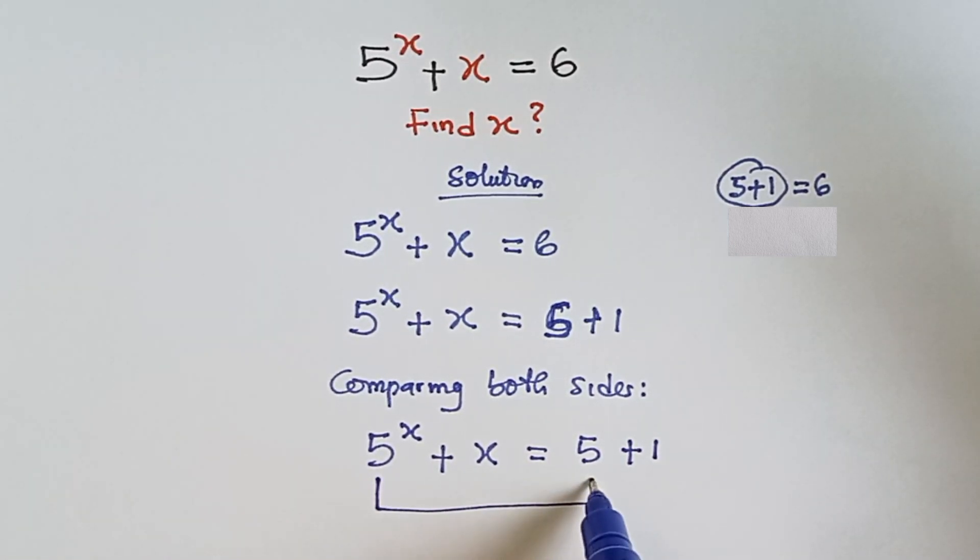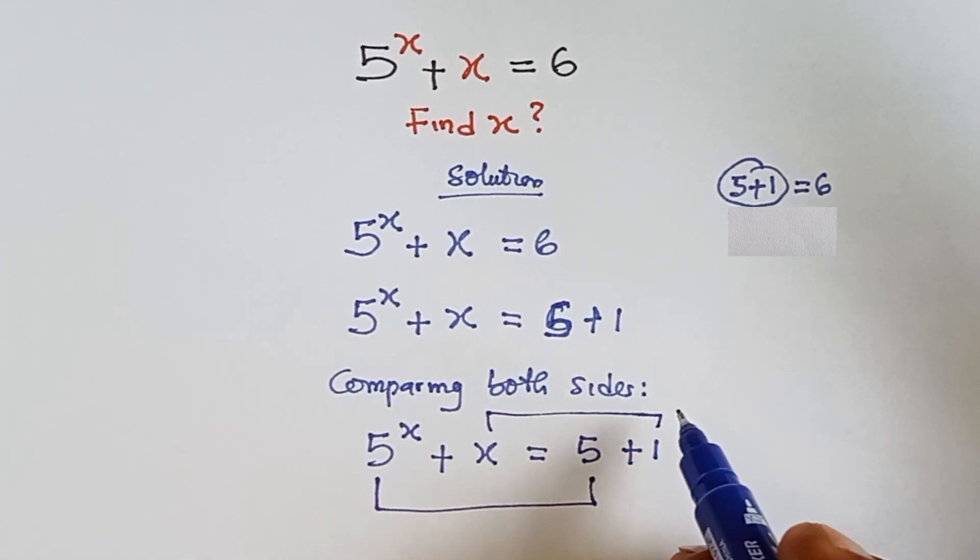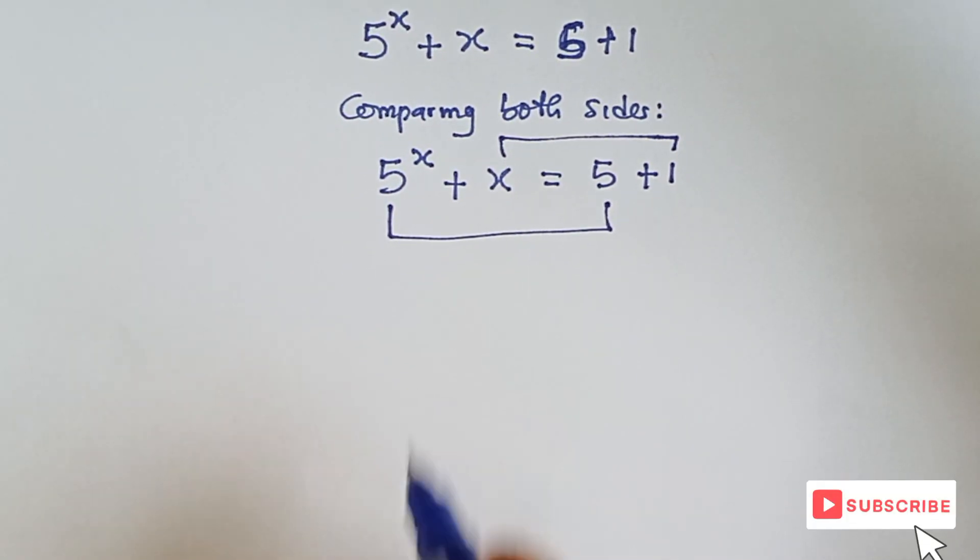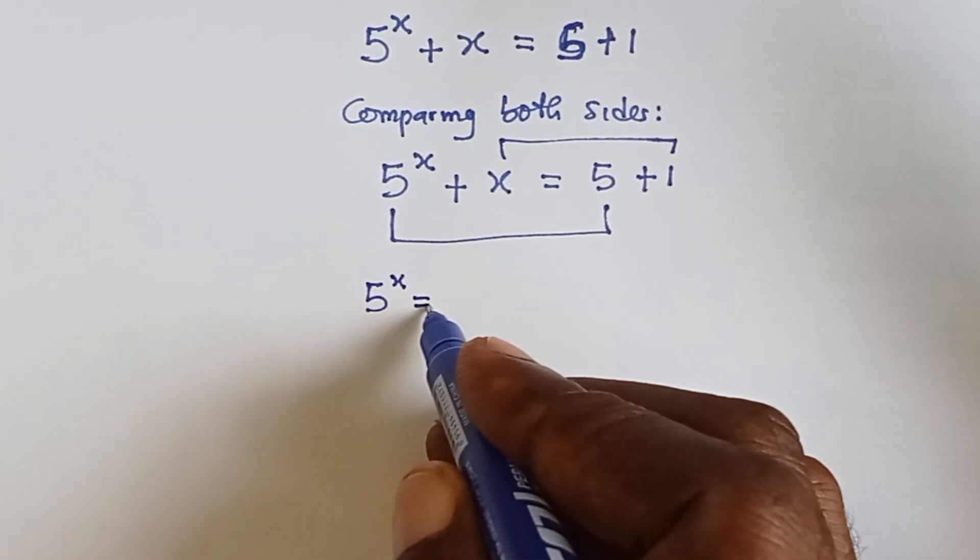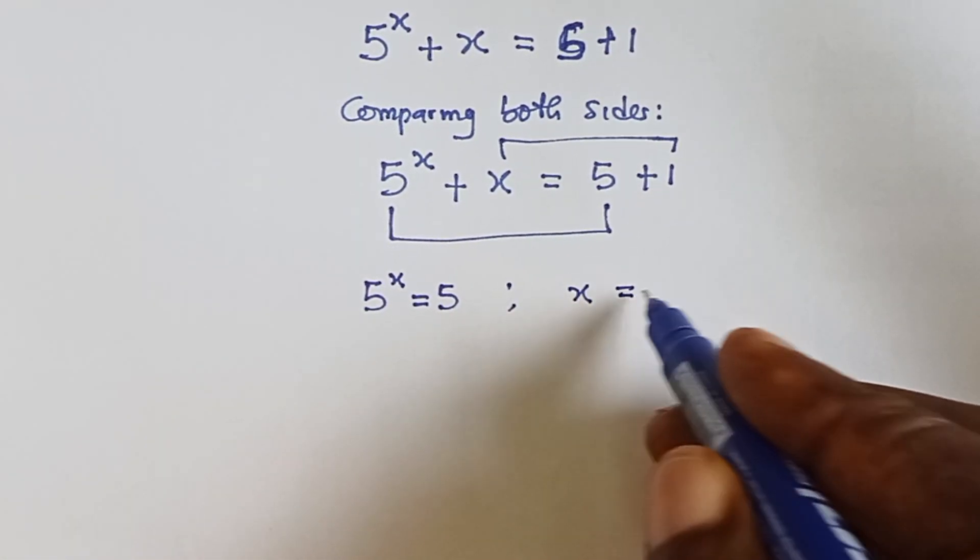5 raised to the power x we go for 5, while x we go for 1. Now we have 5 raised to the power x equals to 5 and then we have x equals to 1.